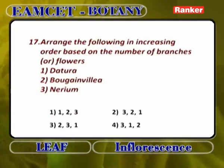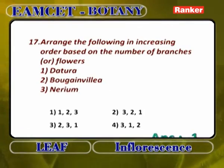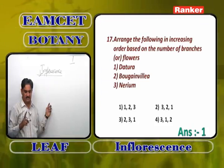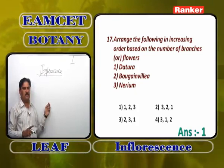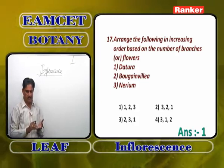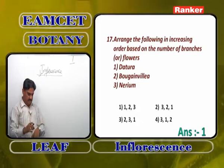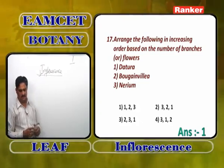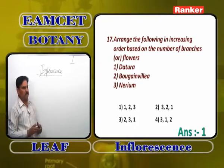Arrange in increasing order based on number of branches: Datura — solitary cyme — 0 branches. Bougainvillea — after the main axis ends as a flower, 2 branches develop, they also end as flowers — 2 branches. Nerium — polycasial cyme — many branches. Answer: 1 — Datura (0), Bougainvillea (2), Nerium (many), i.e., order 1, 2, 3.